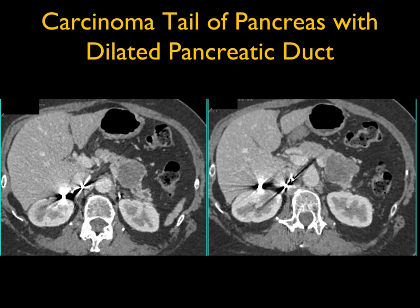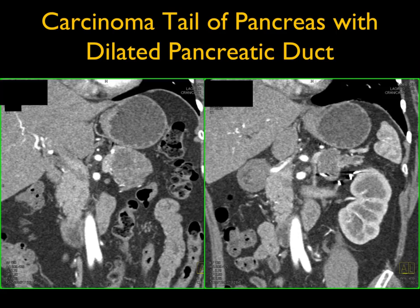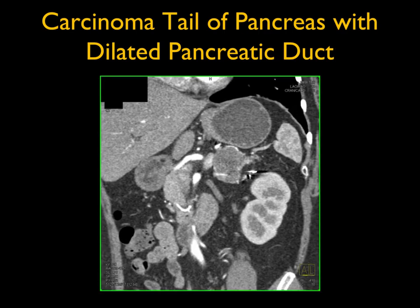This is a reminder that cystic pancreatic tumors do indeed occur. We always think about serous, mucinous, SPEN, and IPMN, but you've got to be thinking: don't miss a cystic neuroendocrine tumor — typically rim-enhancing — or a cystic adenocarcinoma, which was the case here. That duct dilatation and glandular atrophy really help with the diagnosis.